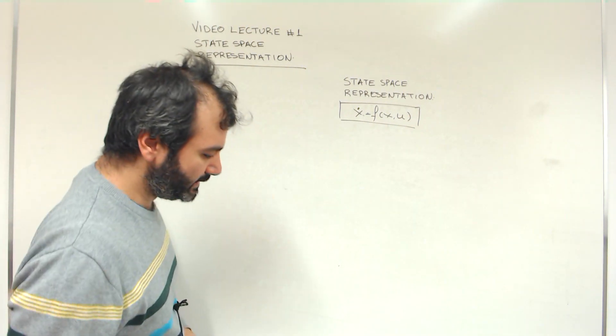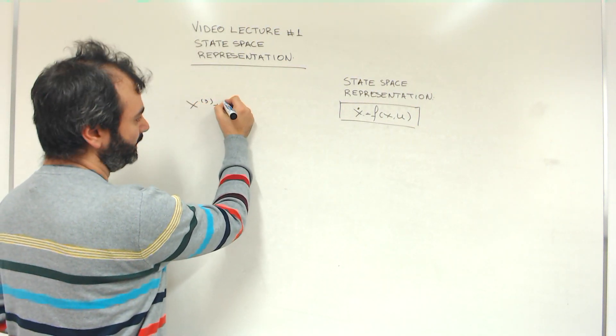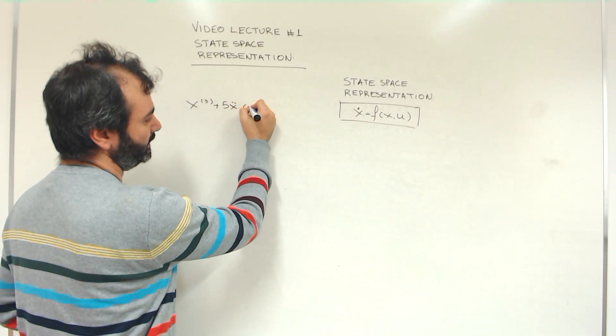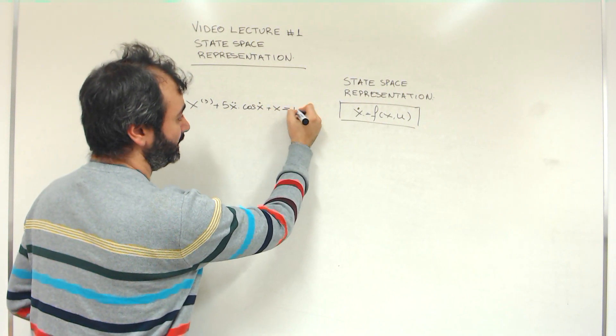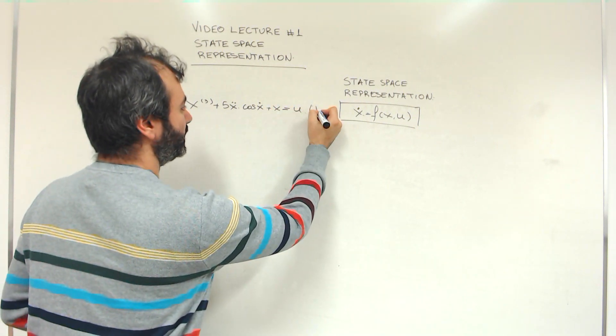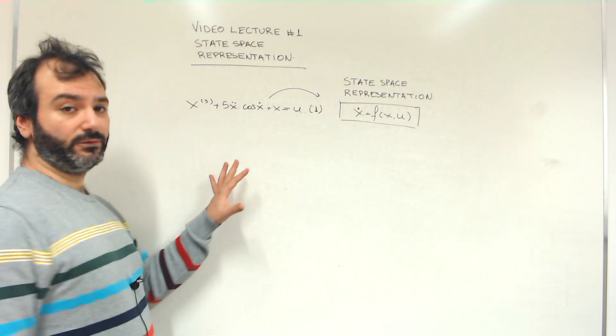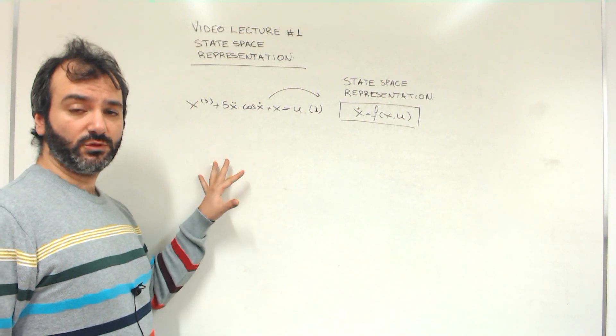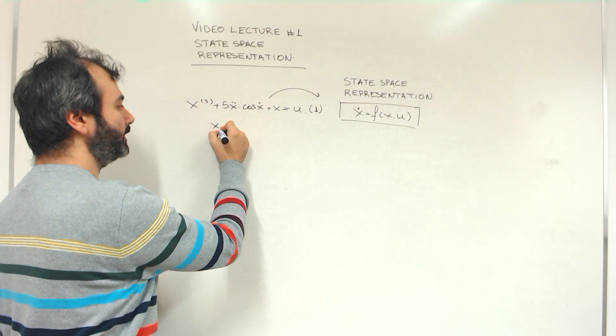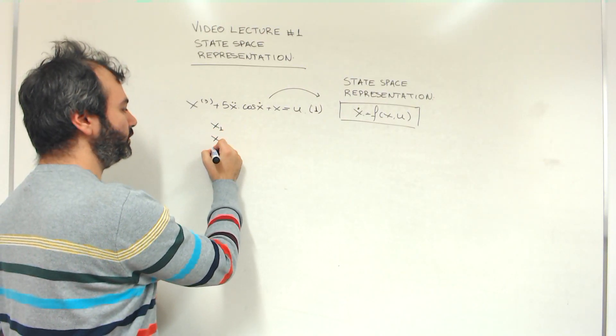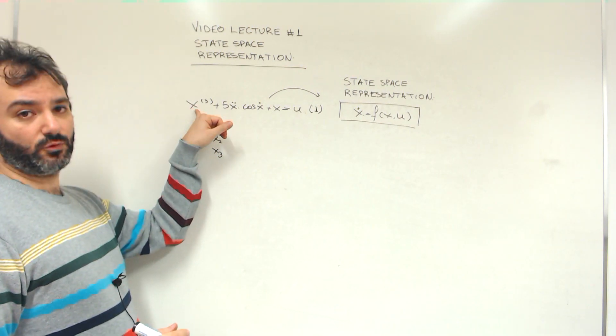I can give you a simple example. Take x third derivative plus 5x second derivative times cosine x first derivative plus x equals u. Let's call this equation number one. The objective is to write it in this form. The trick when we have high-order derivatives is to introduce new variables. These will be x1, x2, x3. I'm introducing three new variables because the highest order here is 3.